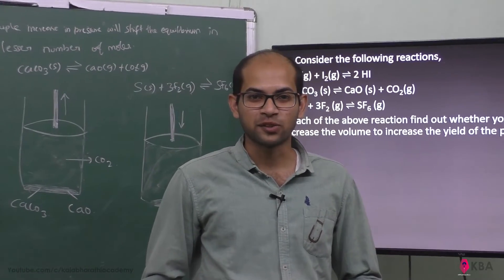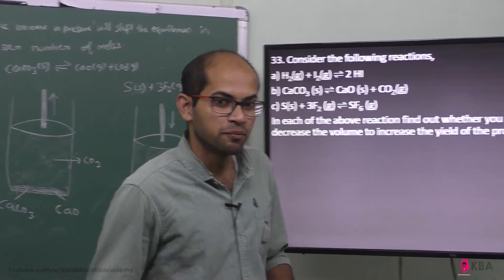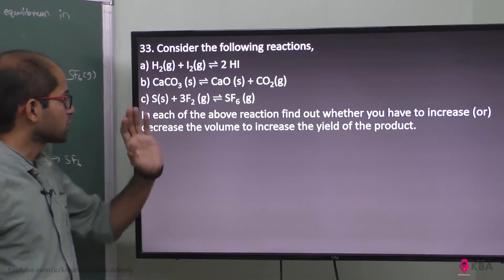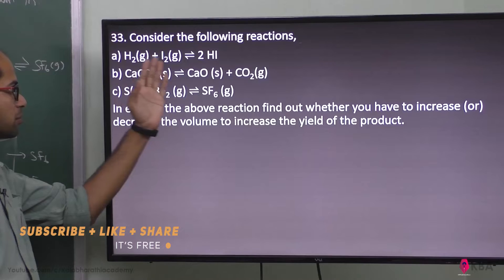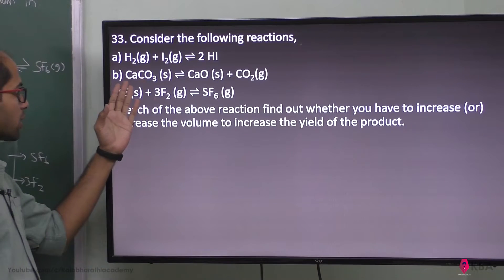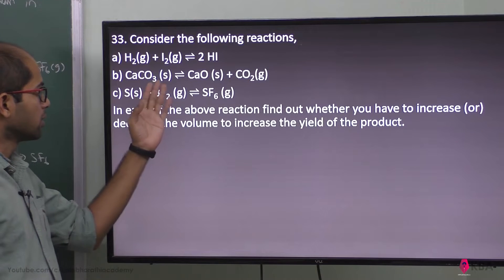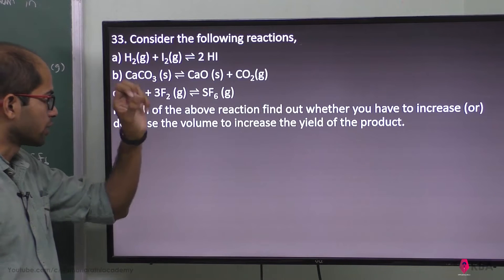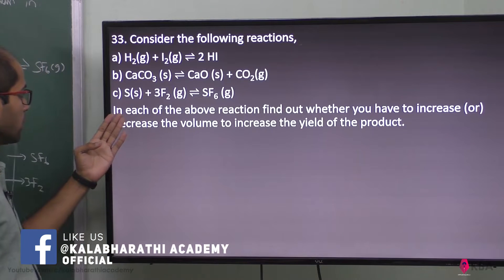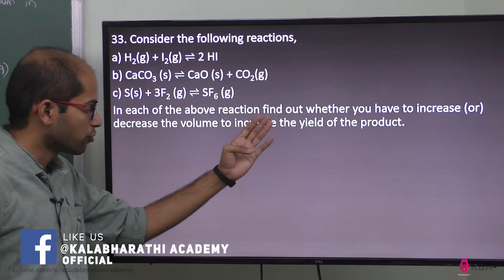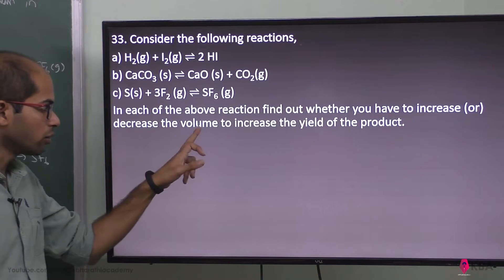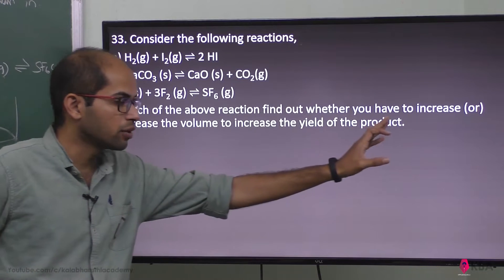This is brief answer question number 33 from the physical and chemical equilibrium chapter. Consider the following reactions: H₂ gas plus I₂ gas gives 2HI; calcium carbonate gives calcium oxide plus carbon dioxide; either solid or gaseous iodine; sulphur plus fluorine gives sulphur hexafluoride. In each of the above reactions, find out whether you have to increase or decrease the volume to increase the yield of the product.